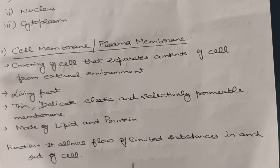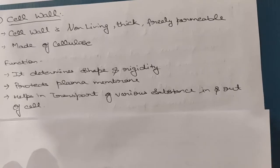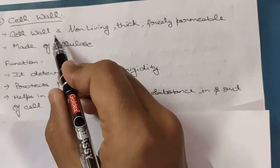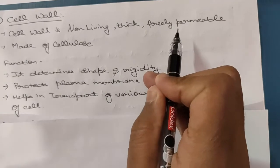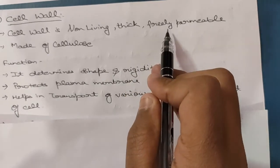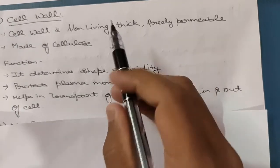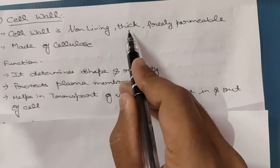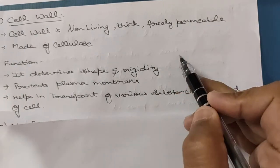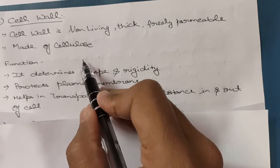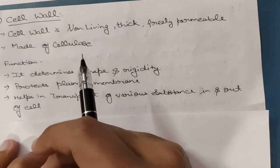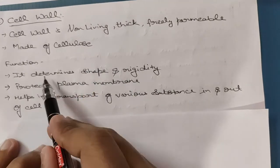The second component is the cell wall. The cell wall is non-living, thick, and freely permeable — compare this to the cell membrane which was living, thin, and selectively permeable. The cell wall is made up of cellulose, whereas the cell membrane is made up of protein and lipid.